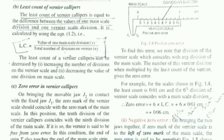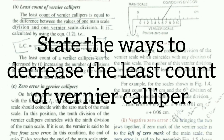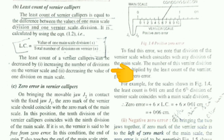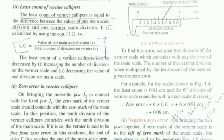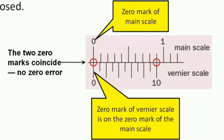This is how you find out the least count of a vernier caliper. Now before you use the vernier caliper, you need to check for zero error. Check whether the vernier caliper's zero point on the vernier scale coincides with the zero of the main scale. If it coincides at zero, there will be no zero error. If it does not coincide, there will be a zero error.